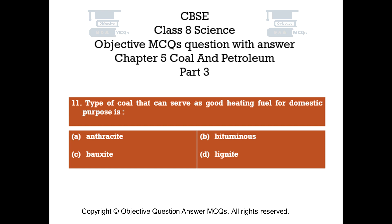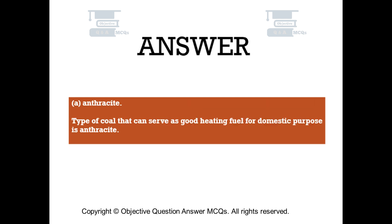Question number 11. Type of coal that can serve as good heating fuel for domestic purposes: Option A: Anthracite. Option B: Bituminous. Option C: Bauxite. Option D: Lignite. The right answer is Option A, Anthracite. The type of coal that can serve as good heating fuel for domestic purposes is anthracite.